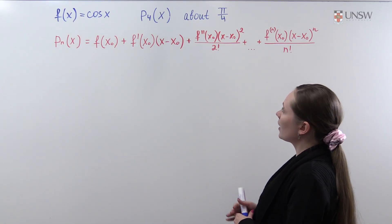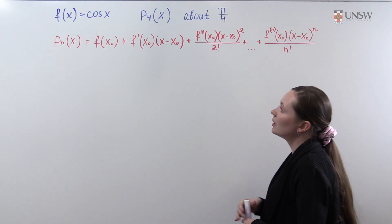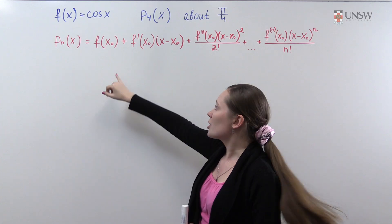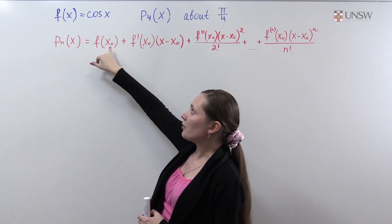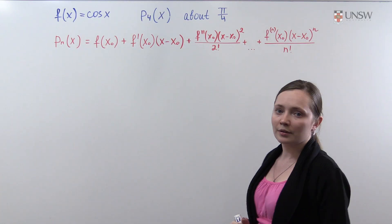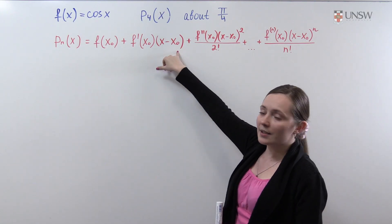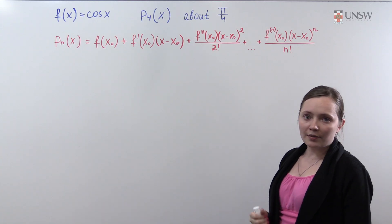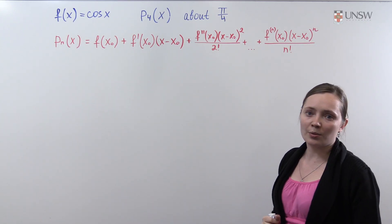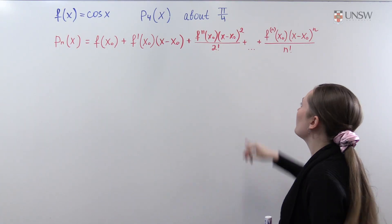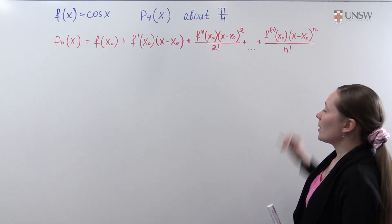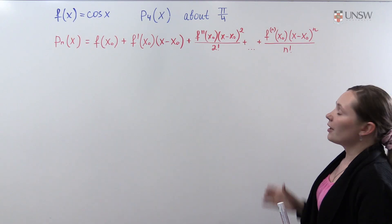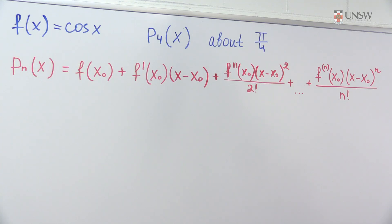Let me remind you the formula for the Taylor polynomial. The Taylor polynomial of degree n for the function f about the point x0 is: the value of the function at x0, plus the value of the derivative at x0 times (x minus x0), plus the value of the second derivative at x0 times (x minus x0) squared over 2 factorial, and so on, up to the nth derivative at x0 times (x minus x0) to the power n over n factorial.